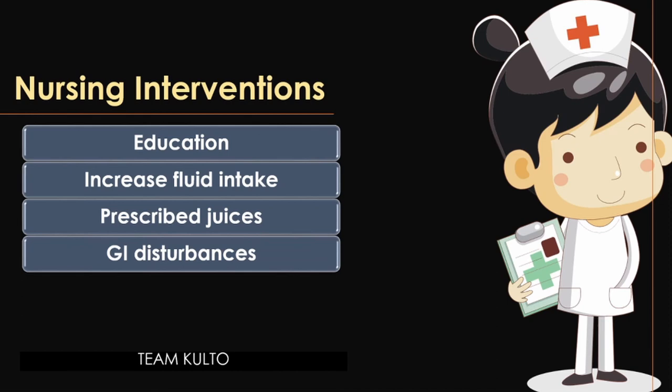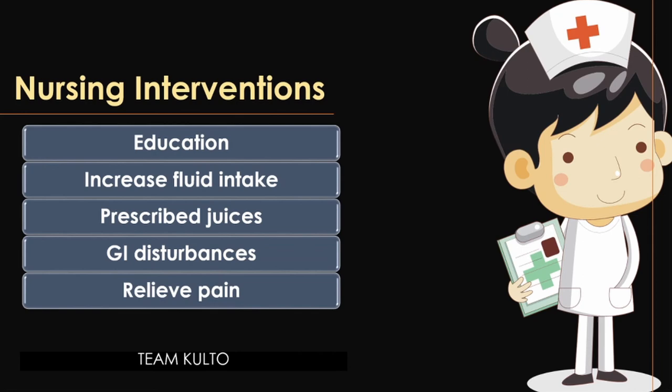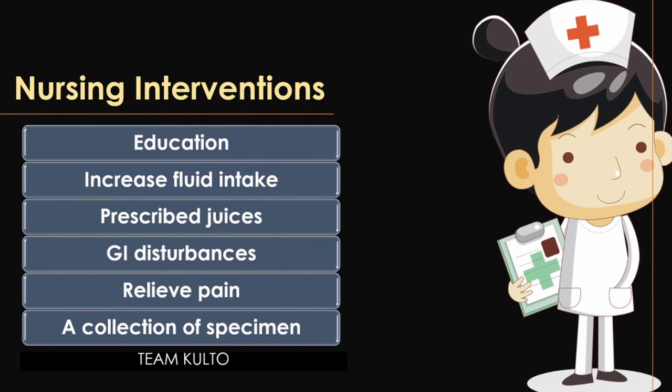To relieve pain, suggest a warm sitz bath for relief of perineal discomfort, or apply heat sparingly to the perineum — but be careful not to burn the patient, as there is already a burning sensation during urination. For collection of specimen, teach the woman to clean the perineum properly, keep the labia separated during voiding, because a non-contaminated midstream specimen is essential for accurate diagnosis.